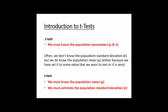So for single sample T-tests: the T-test comes down to estimating the population variance using degrees of freedom. For a Z-test we have to know the population parameters; for a T-test we must know the population mean and we estimate the population standard deviation.